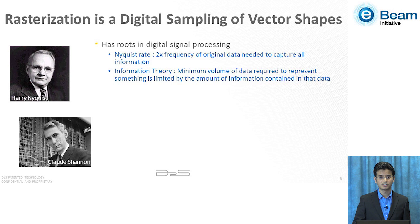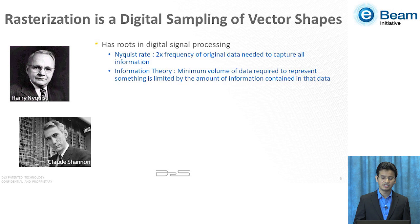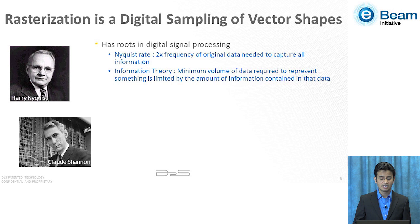Rasterization has roots in digital signal processing. Just like in audio processing you have to sample the audio data in 1D, in the case of rasterization you are sampling the vector shapes into a 2D map of pixels. So it has to adhere to the Nyquist criteria, which basically says it needs to capture all the data — and in order to capture all the data, you need to sample at 2x the frequency. It also adheres to information theory, which says the minimum volume of data required to represent something is limited by the information content in that data.